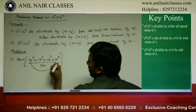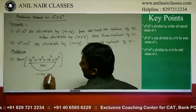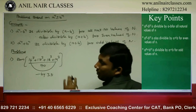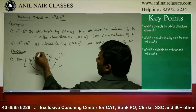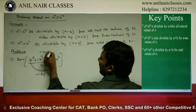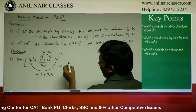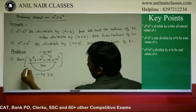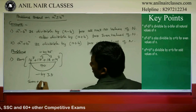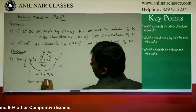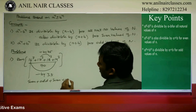First term plus last term: 16 power 3 plus 19 power 3 is divisible by 35. Second pair: 17 power 3 plus 18 power 3 is also divisible by 35. So the entire numerator is divisible by 35. Now, 16 is even, 17 is odd, 18 is even, 19 is odd.